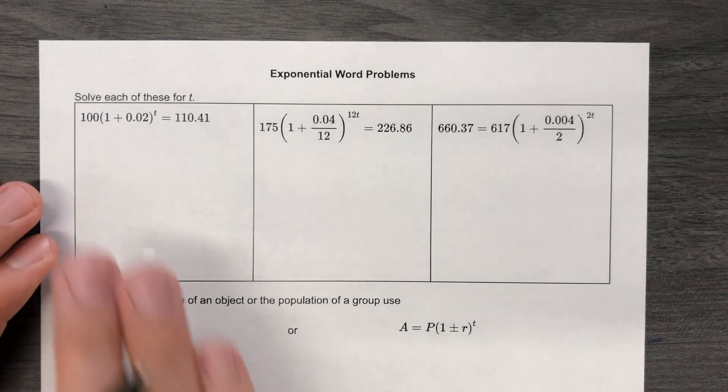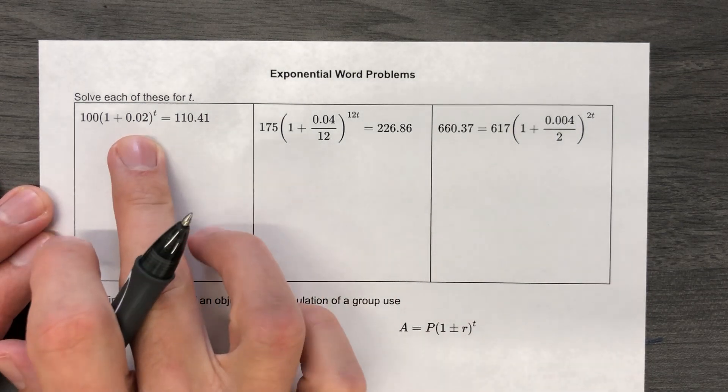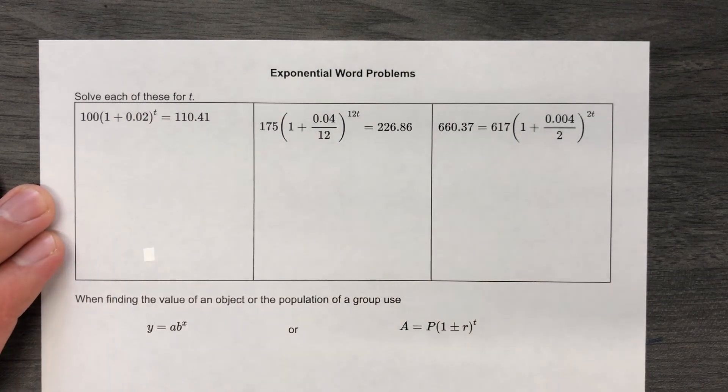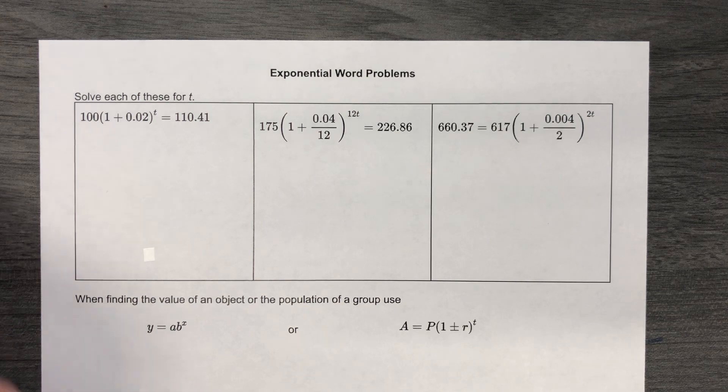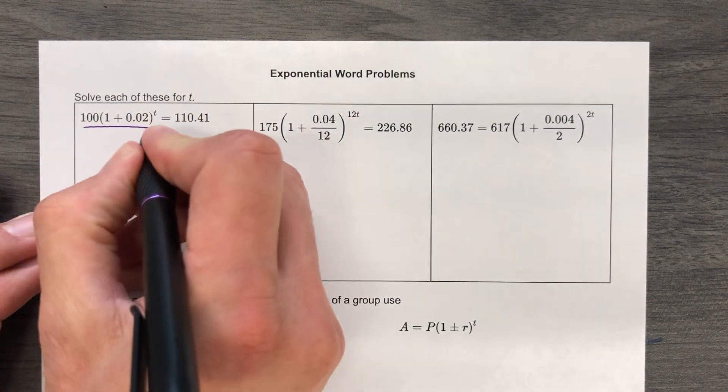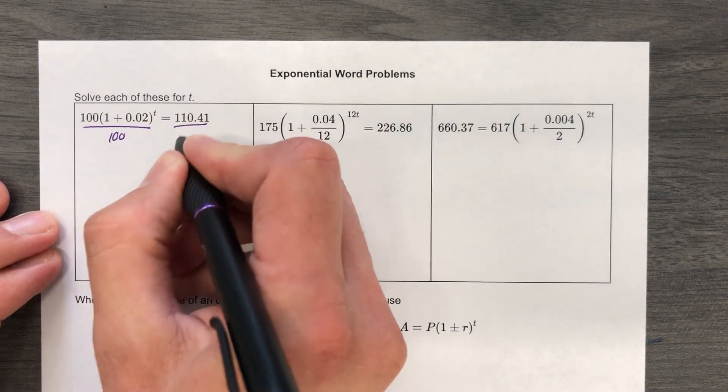So we're going to start by looking at these and saying, oh, you know what? That would be exponential if blah, blah, blah. So you know what? This would be exponential if we had divided by 100. So let's divide by 100.